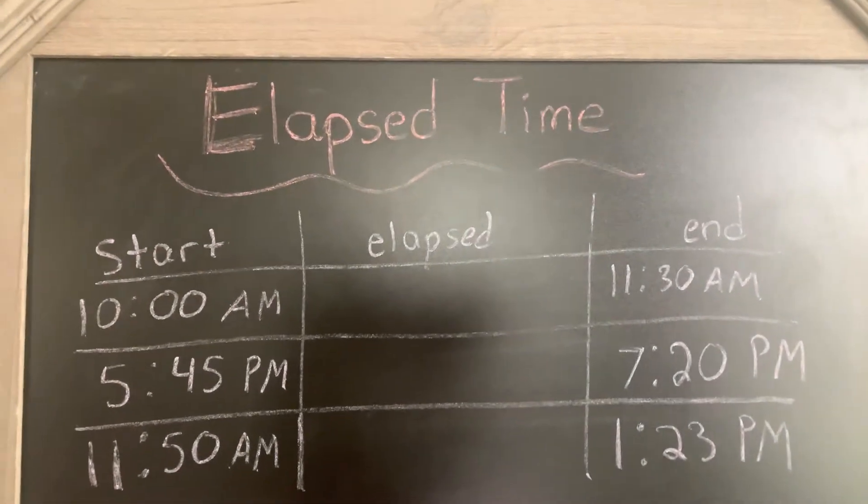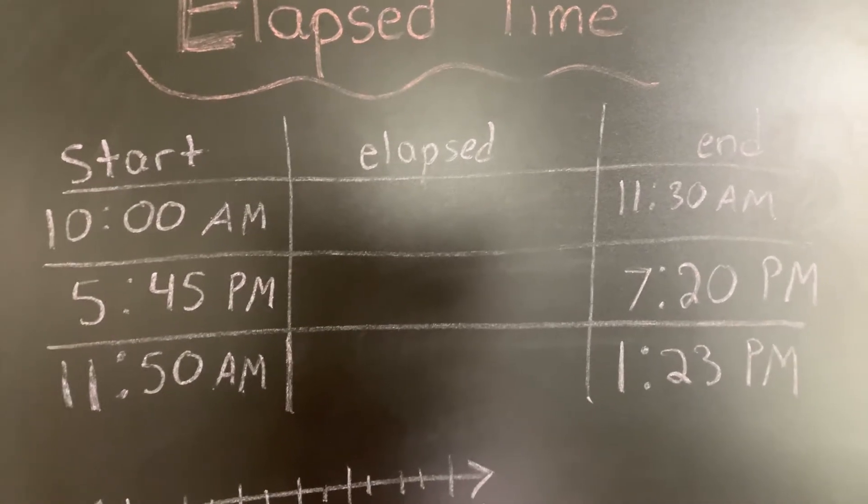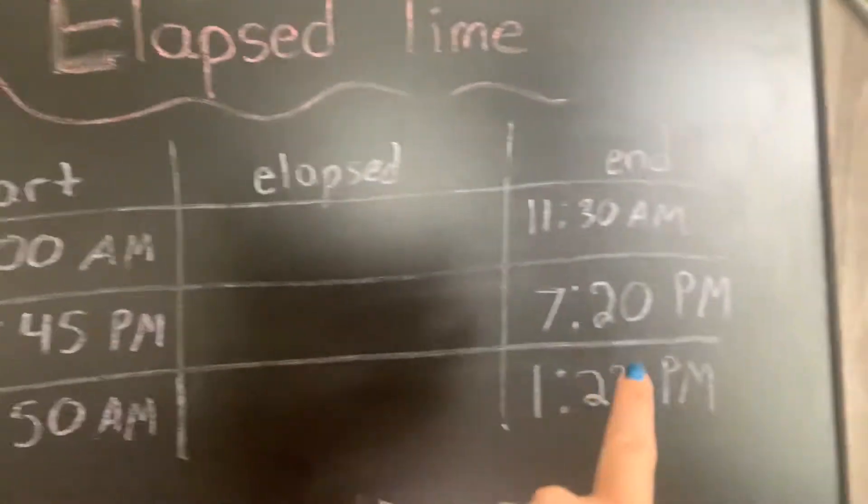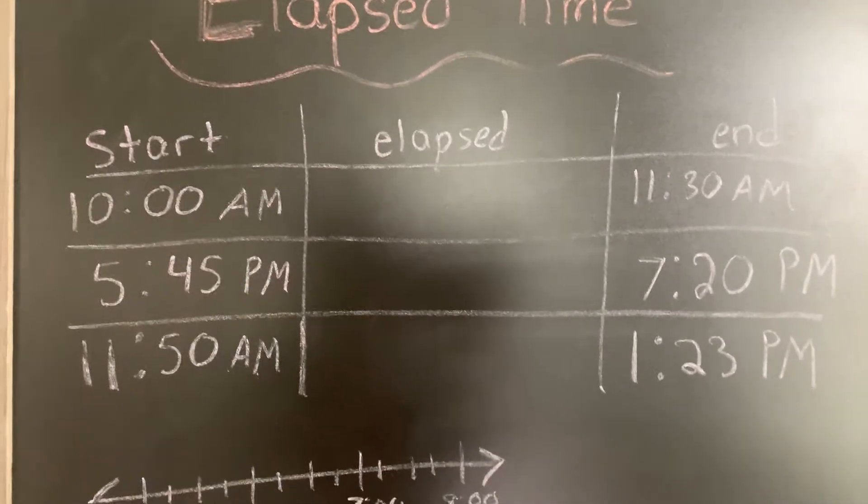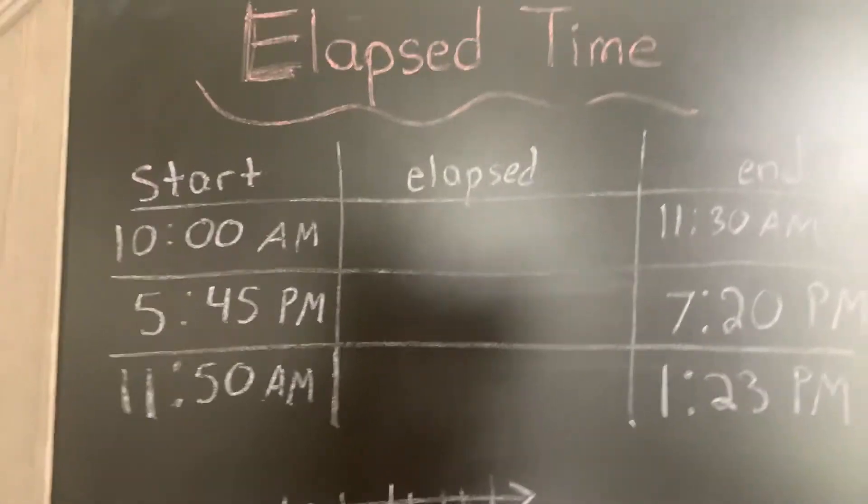We have another elapsed time activity. This looks a little bit different than the first lesson I did with you guys. I'm going to give you a start and an end, and then you're going to have to find the elapsed time or how much time has passed. I included a couple number lines so that we can practice, and then I'll use my clock.